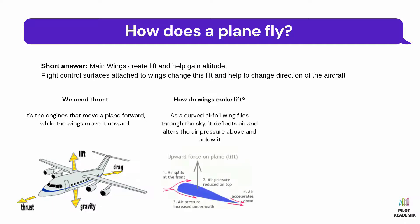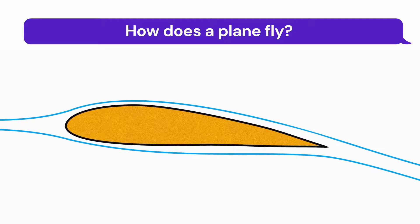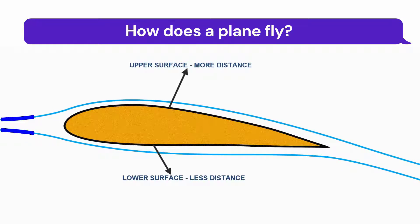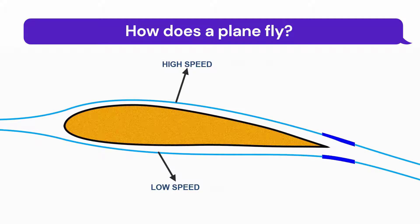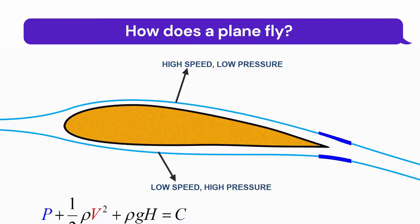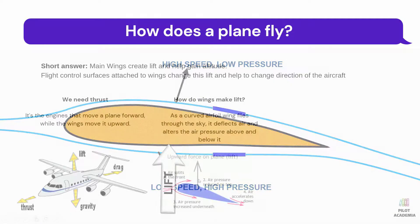How do wings make lift? In one sentence: wings make lift by changing the direction and pressure of the air. As you can see from the picture, first, air splits at the front of the wings. Air pressure reduces on top of the wings and air pressure increases underneath. There is a pressure difference between the bottom of the wings and the upper side — high pressure below and low pressure above — and this pressure difference causes the lift.